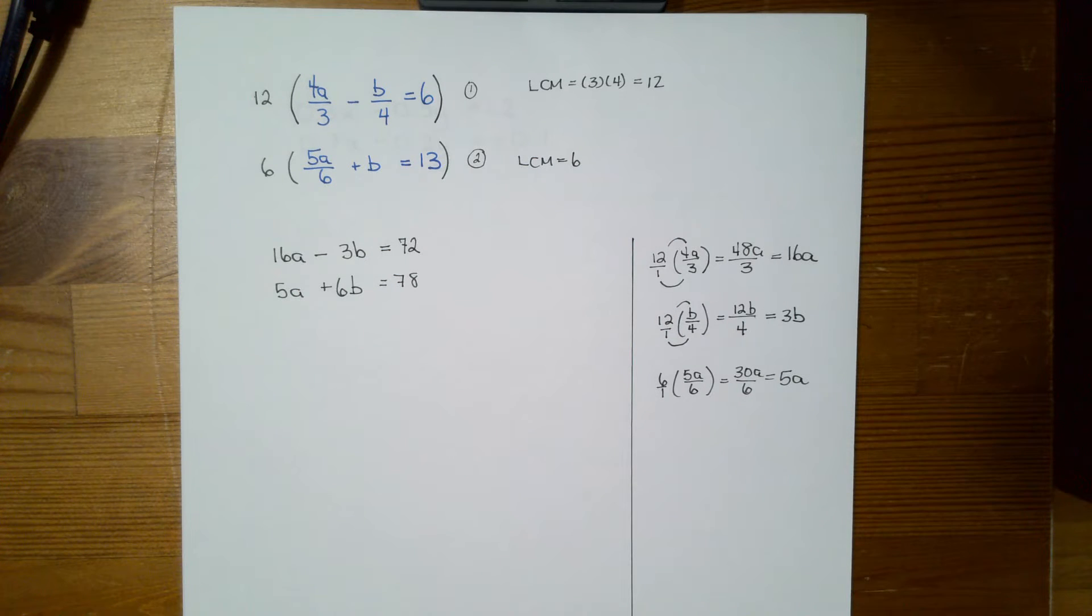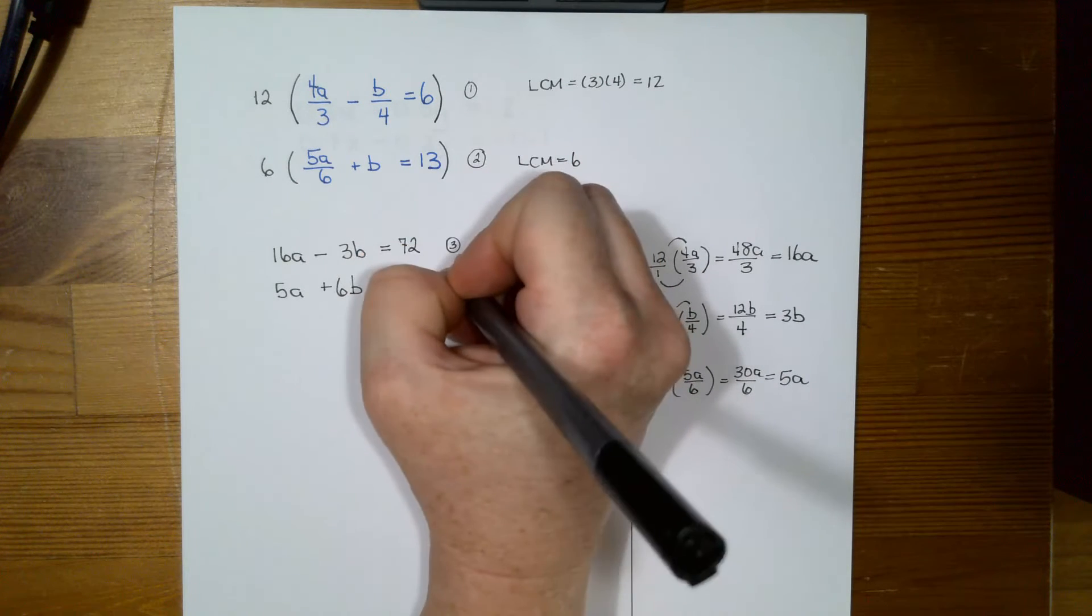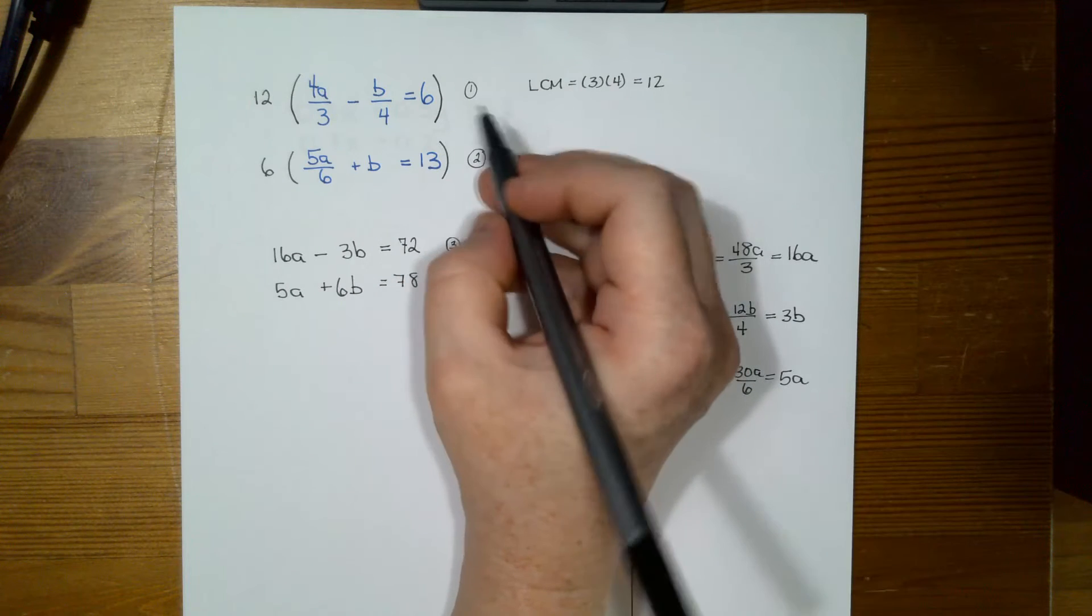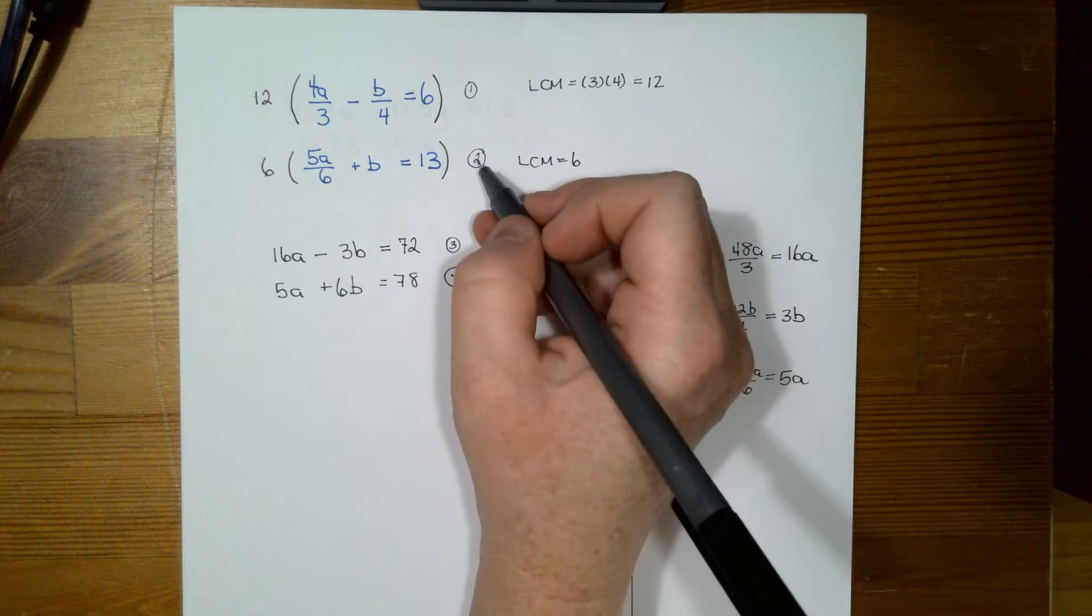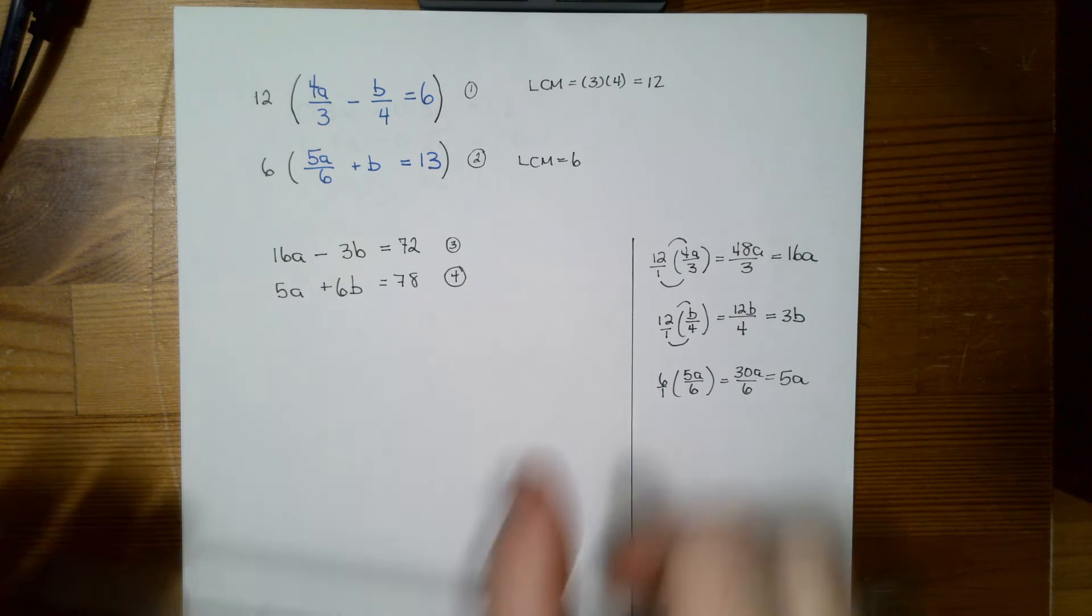And now I have 2 expressions. They're equivalent. We're no longer dealing with 1 and 2. These are now 3 and 4. Okay, the equation 3 and equation 1, they're equivalent expressions. And equation 4 and equation 2 are equivalent expressions. So now I have equivalent expressions and I can simply go ahead and do my normal method of elimination.